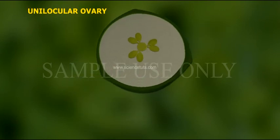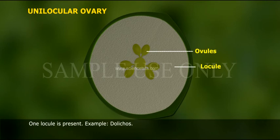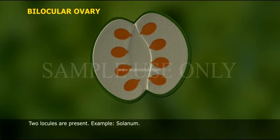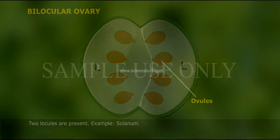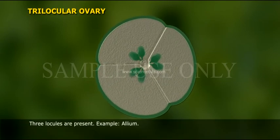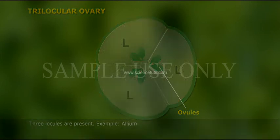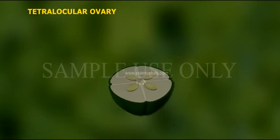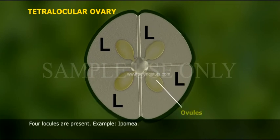Based on the number of locules in the ovary, the ovary is of different types. Unilocular ovary: one locule is present. Example: Dolichos. Bilocular ovary: two locules are present. Example: Solanum. Trilocular ovary: three locules are present. Example: Allium. Tetralocular ovary: four locules are present. Example: Oenothera.